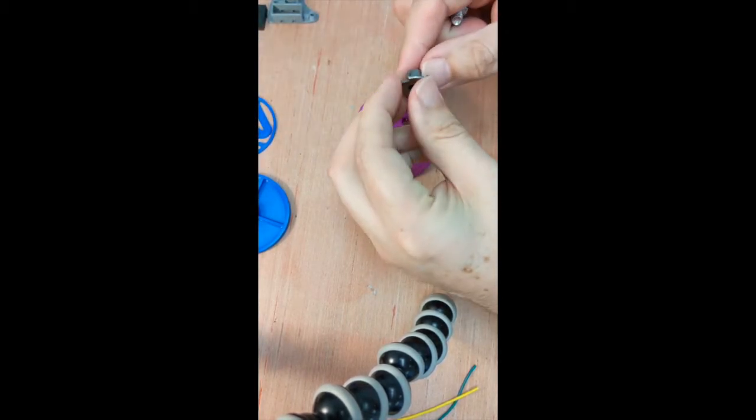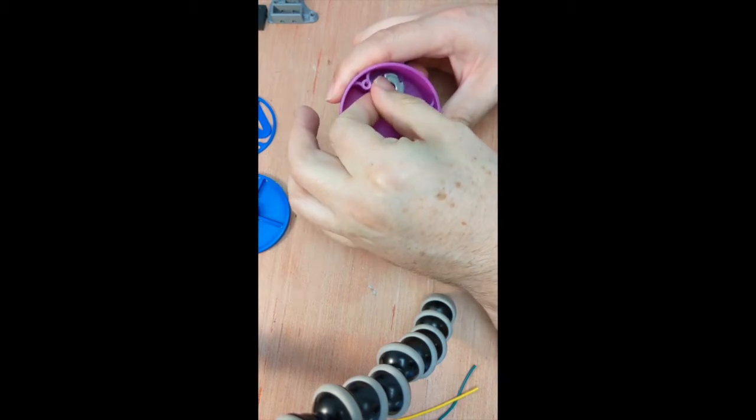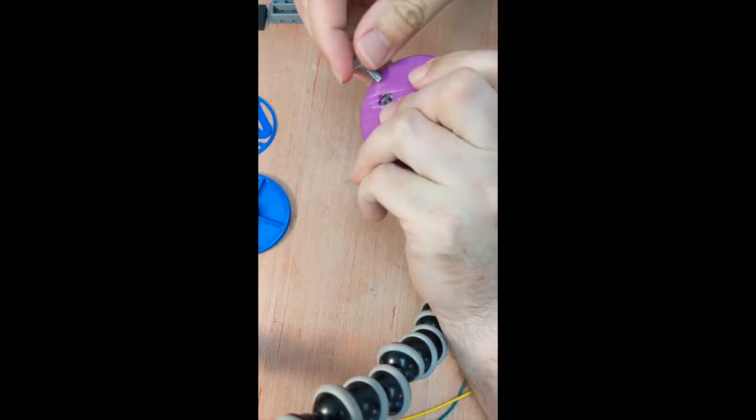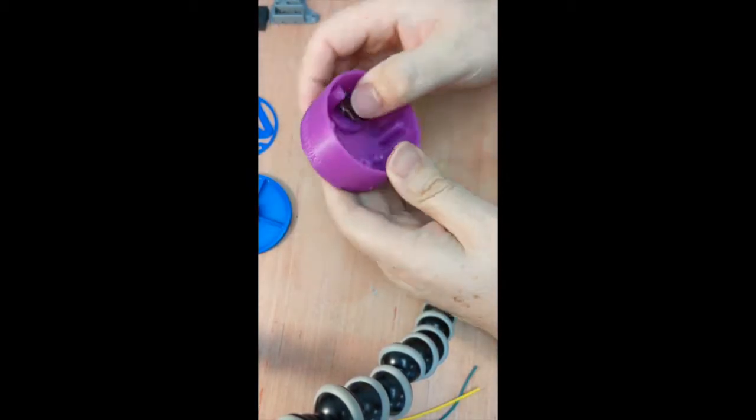Take the t-nut, line the teeth up in the grooves on the base bottom and hold it in place. Insert the hex bolt all the way in from the outside. Make sure the teeth engage with the grooves.